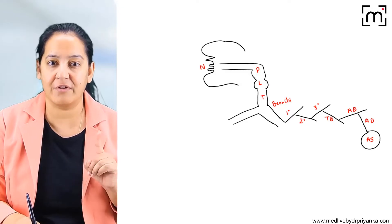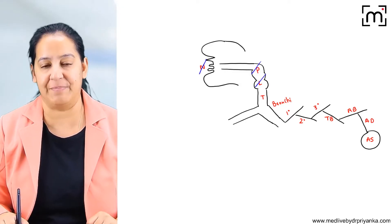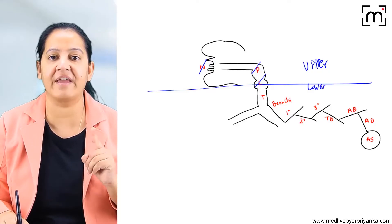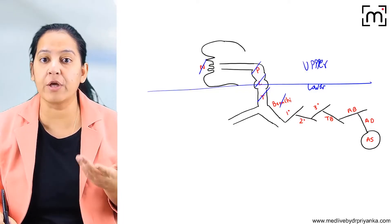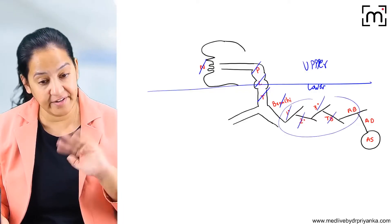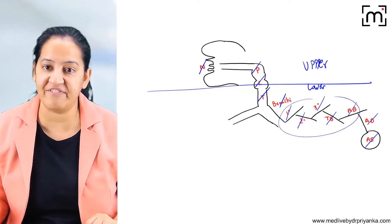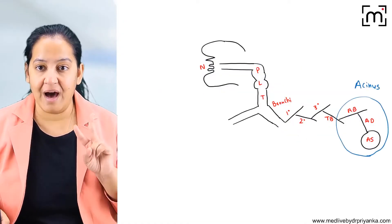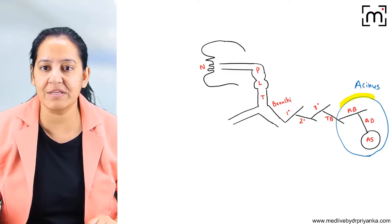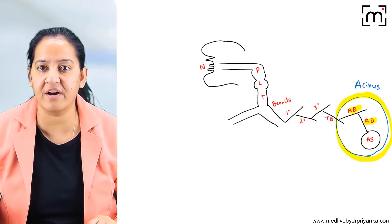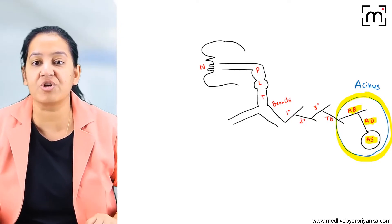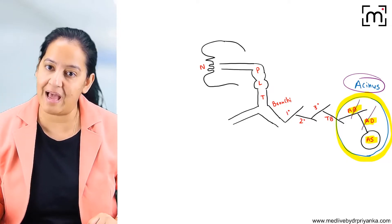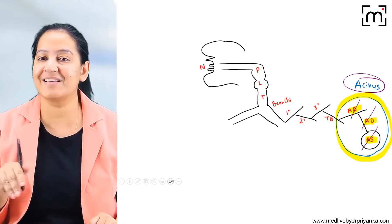Please learn this respiratory tract by heart. Nose, pharynx, and larynx constitute the upper respiratory tract. From trachea onwards it is the lower respiratory tract, which includes the trachea, two bronchi, and the bronchioles — primary, secondary, tertiary, terminal — then respiratory bronchioles, alveolar duct, and alveolar sac. The last three structures — respiratory bronchiole, alveolar duct, and alveolar sac — together constitute the acinus, the structural and functional unit of the lung, just like the glomerulus is the structural and functional unit of the kidney.